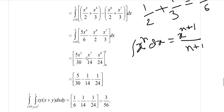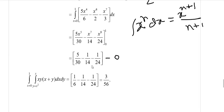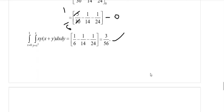Substituting x = 1 and x = 0: we get 5/30 − 1/14 − 1/24, which simplifies to 1/6 − 1/14 − 1/24. Computing with LCM gives 3/56. Therefore the double integral of xy(x + y) dx dy over x from 0 to 1 and y from x² to x equals 3/56.